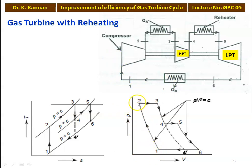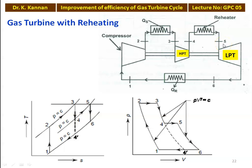The process for the reheating cycle: 1 to 2 is compression, 2 to 3 is heat addition in the heat exchanger, 3 to 4 is expansion in the high pressure turbine, 4 to 5 is heat addition in the reheater, 5 to 6 is expansion in the low pressure turbine, and 6 to 1 is heat rejection in the heat exchanger. Because of the two stages of expansion, the turbine produces additional work. For the ideal situation, the reheating temperature T5 equals T3 — the inlet temperatures of both turbines are equal — so the reheater is designed so that the inlet temperature of the HP turbine equals the inlet temperature of the LP turbine.